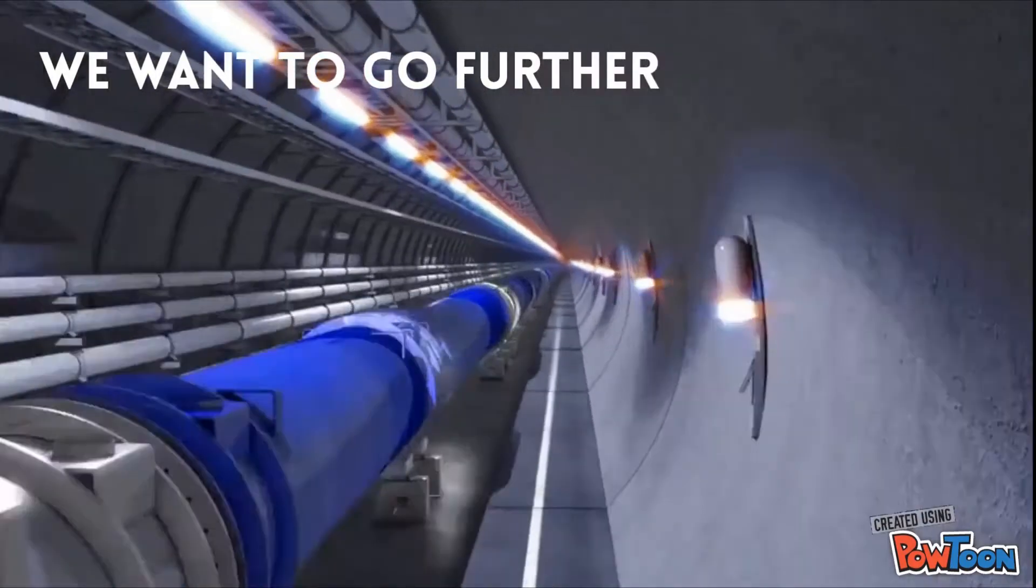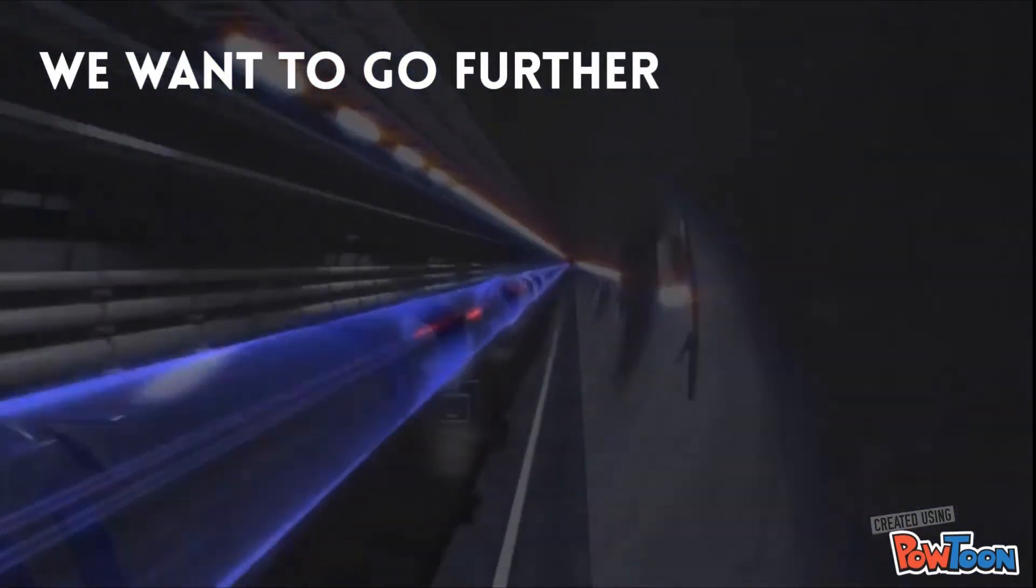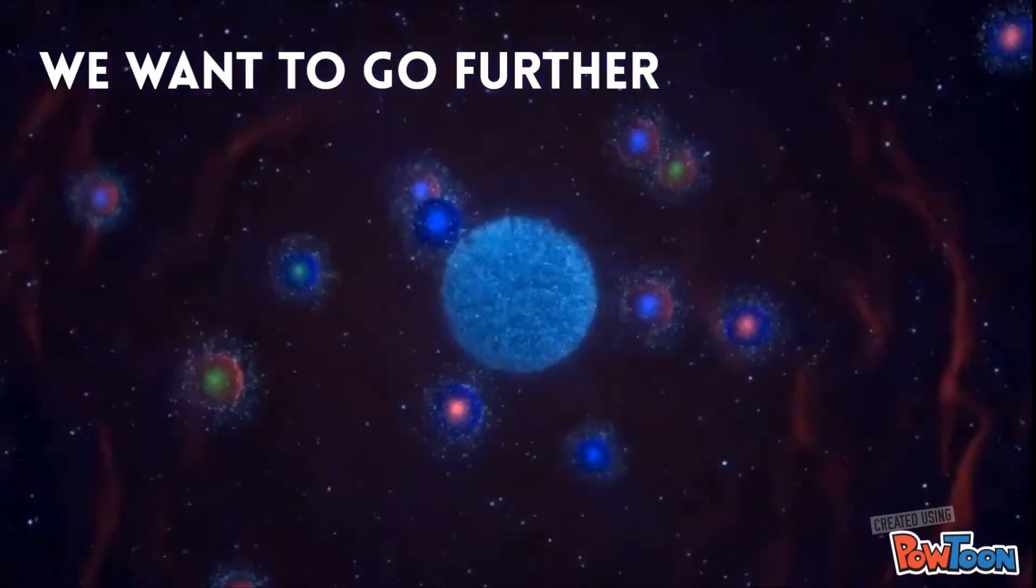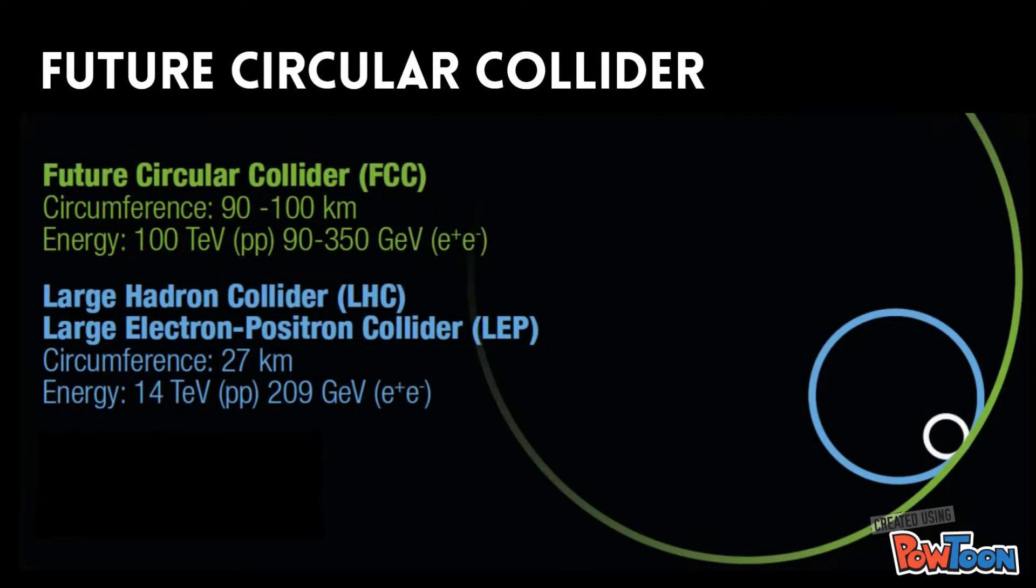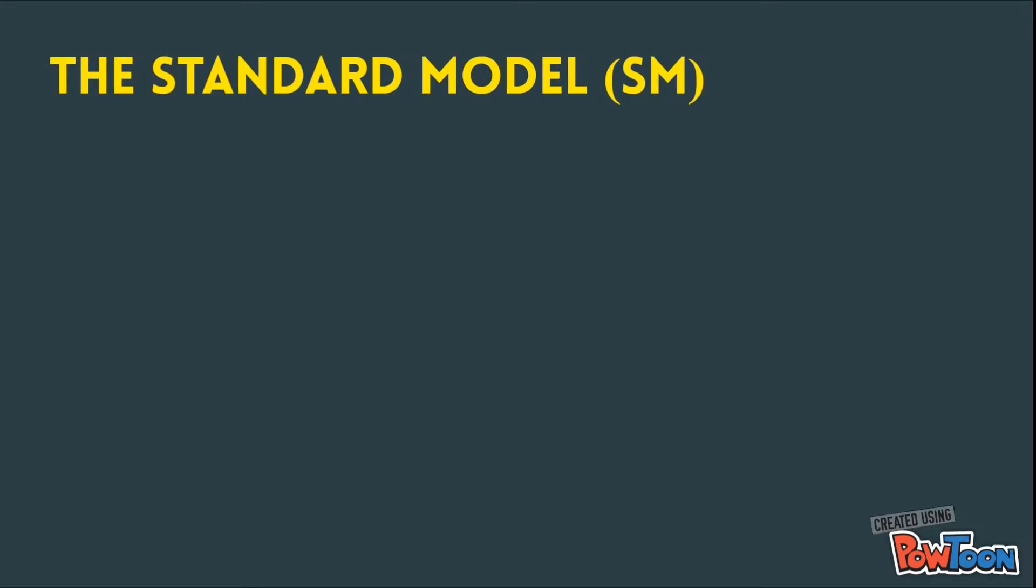However, we still want to go further. We want to keep increasing the energy to have access to even earlier ages in the history of the Universe. And this is why larger, more powerful accelerators are currently being designed. One of these projects is the future circular collider. It is expected to be very similar to the LHC, but capable of achieving collision energies 10 times larger.